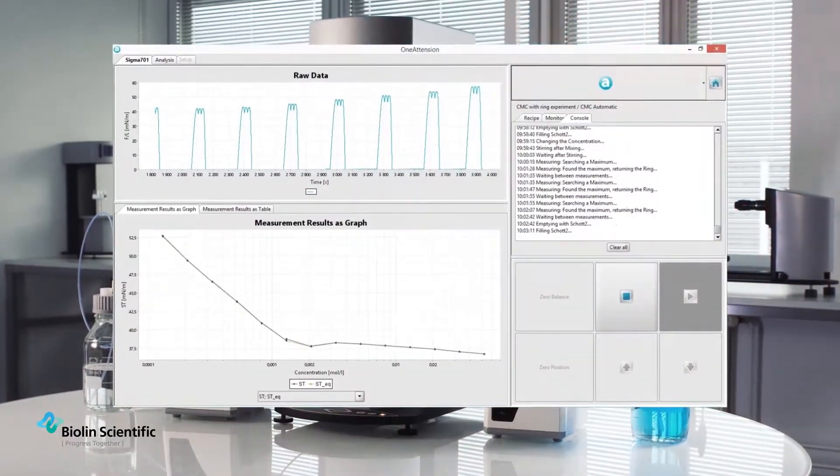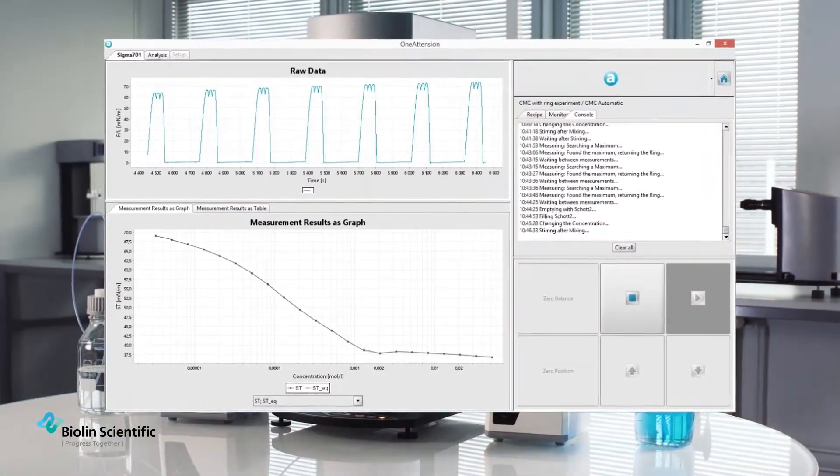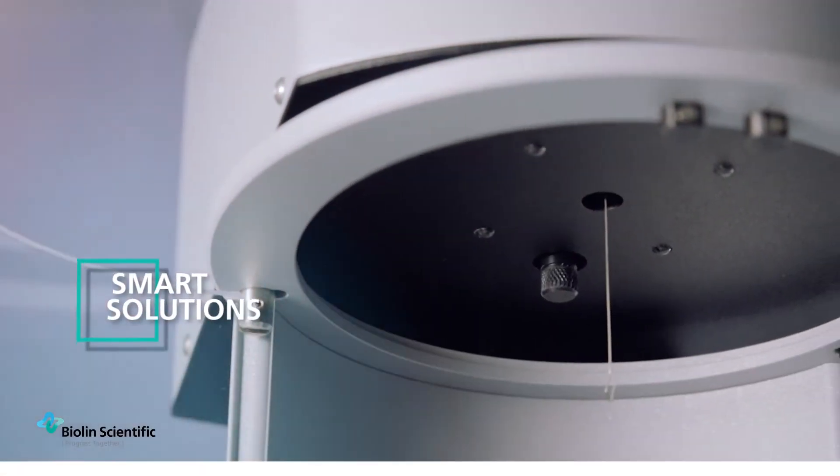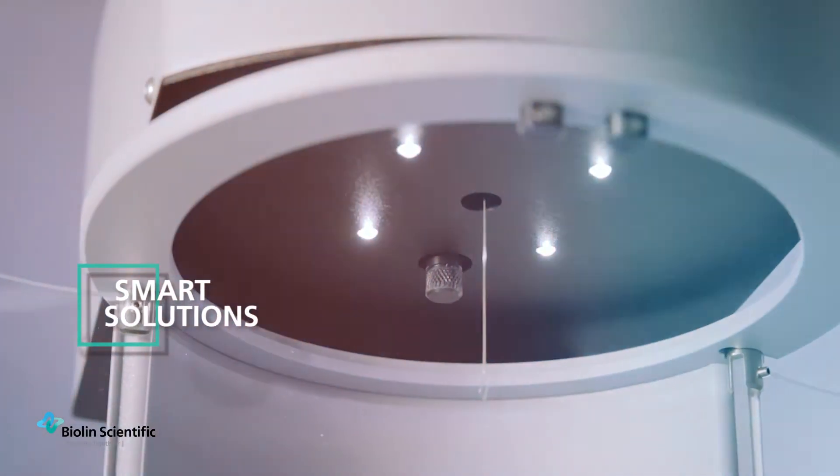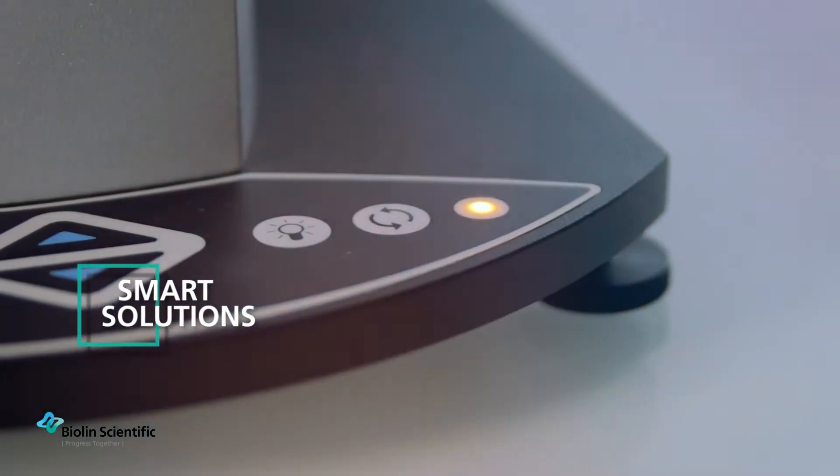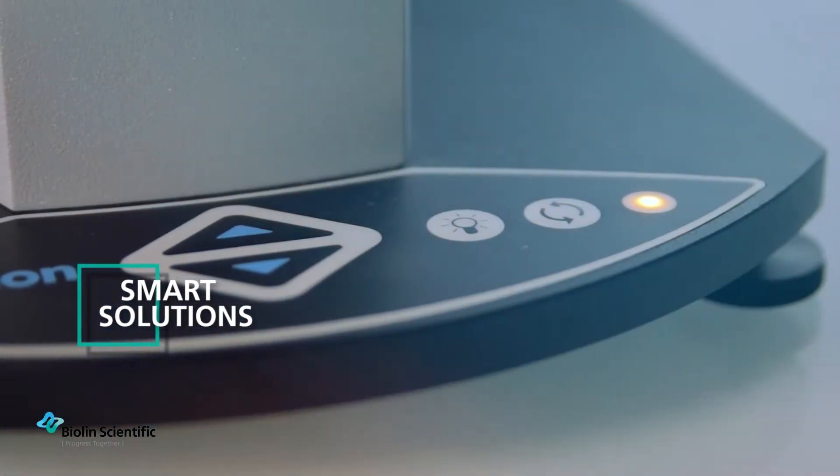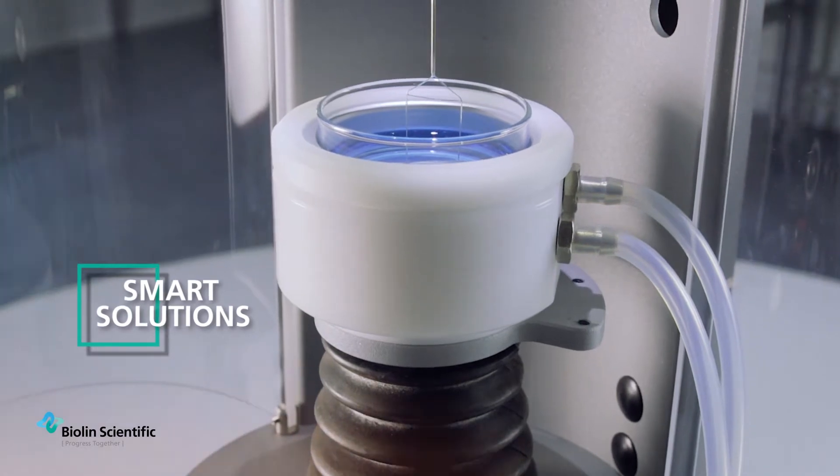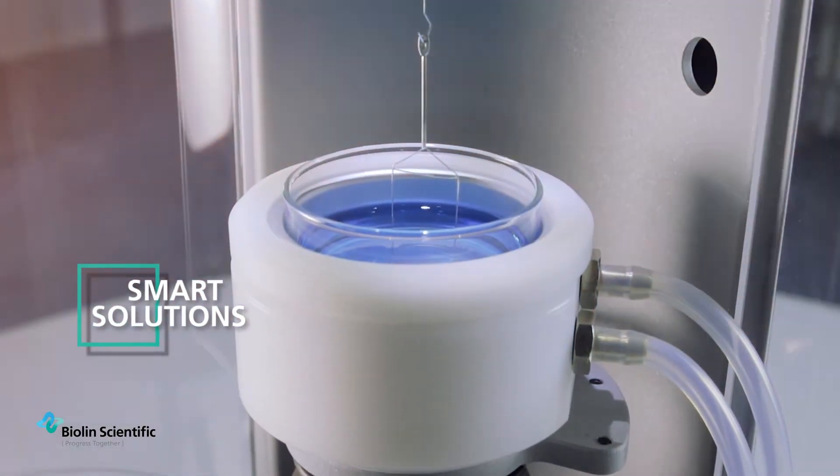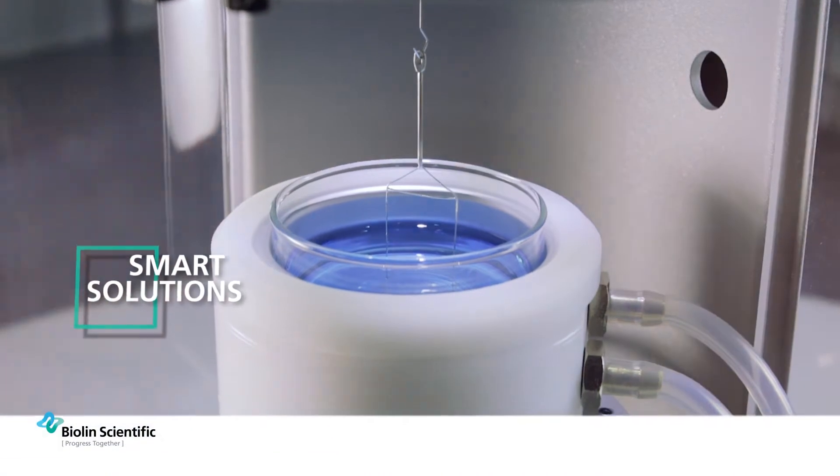Sigma 700 and 701 are full of smart solutions that would help in everyday measurements. For example, temperature control of the sample can be fully computer controlled all the way up to 200 degrees centigrade.